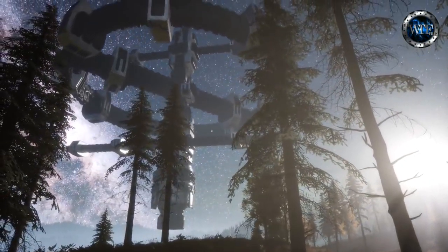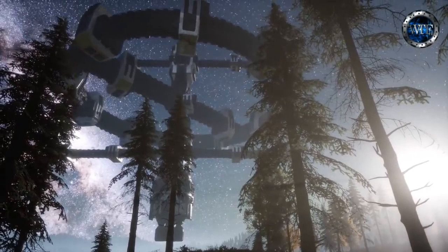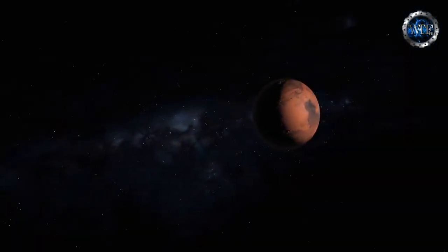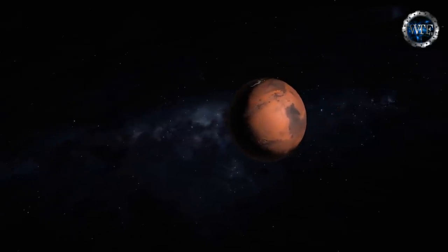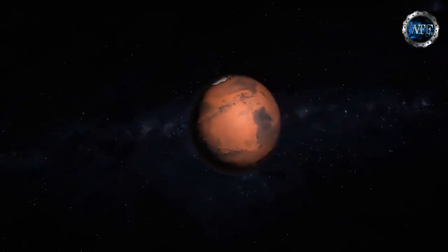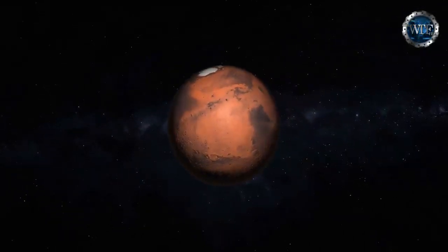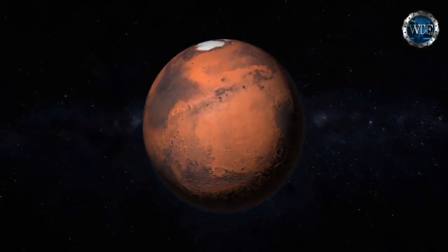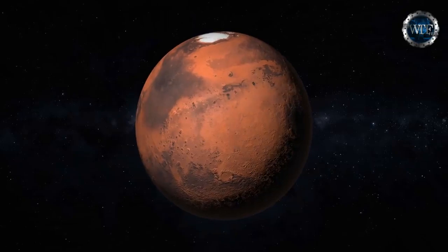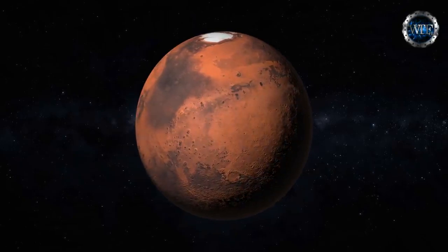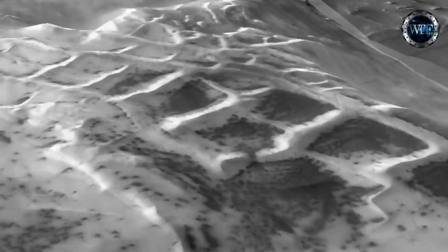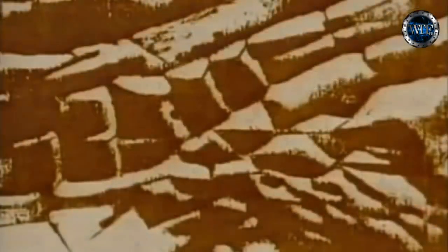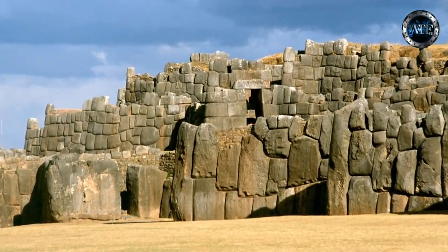Researchers now believe that Mars was habitable as little as 10,000 years ago. When the United States launches the Mariner and Viking spacecraft to explore Mars in the 60s and 70s, enigmatic structures resembling those on Earth are photographed by both spacecraft. This is a feature on Mars that NASA nicknamed the Inca City. Here we see it compared with Sacsayhuaman in Peru.